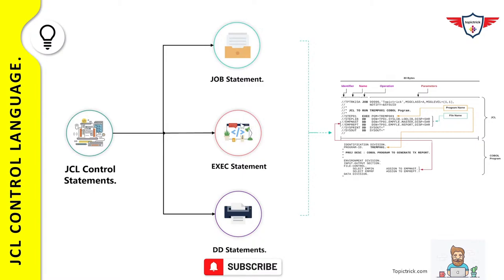If you want to run more than one program in a single job, you write a separate step for each program. Each step has an execute statement specifying the program name and DD statements specifying the data sets used. Do you need all three types of control statements in a JCL? No — every job must contain a minimum of a job card and an execute statement. DD statements are optional and only required if your program or utility is using any data sets.